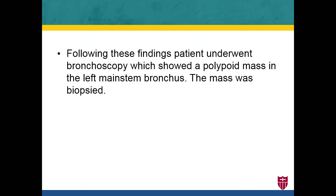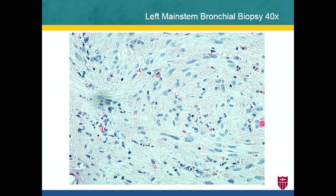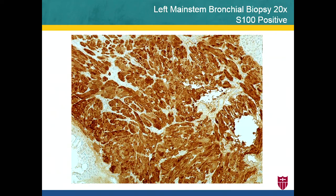The mass was biopsied and sent to the pathology department. This is the picture of the biopsy, showing bronchial tissue and the mass. The high-field view shows that the cells have eosinophilic cytoplasm, and these eosinophilic granules are very specific for granular cell tumor. More specific still is the S-100 protein stain, which confirms granular cell tumor.